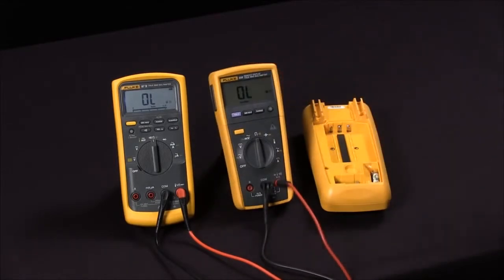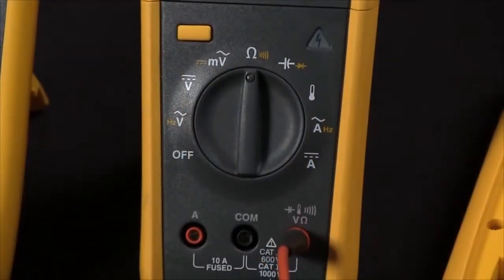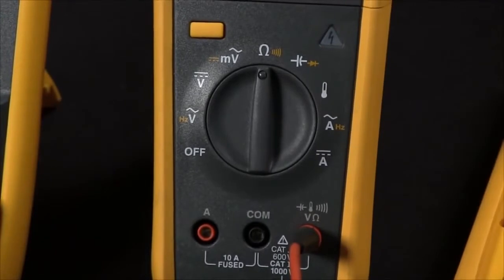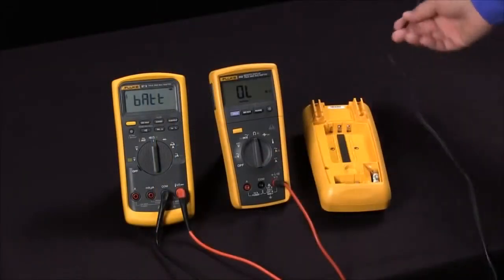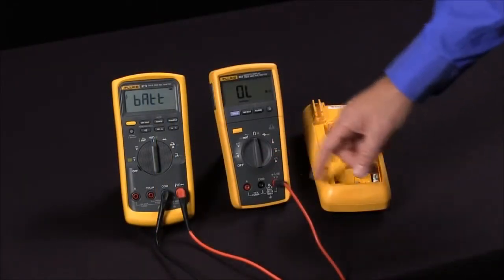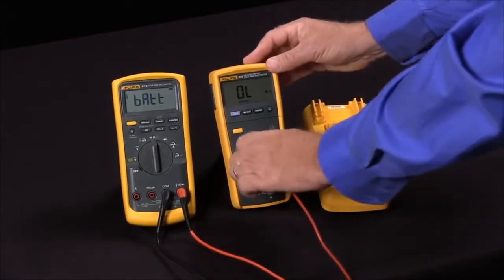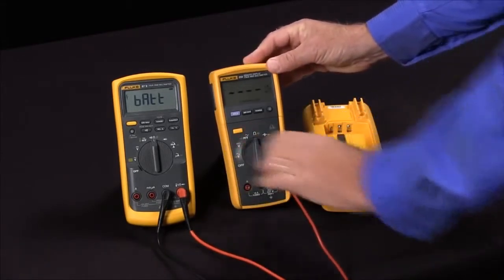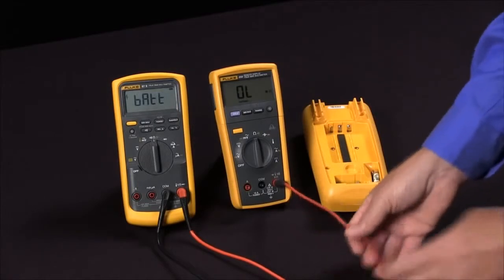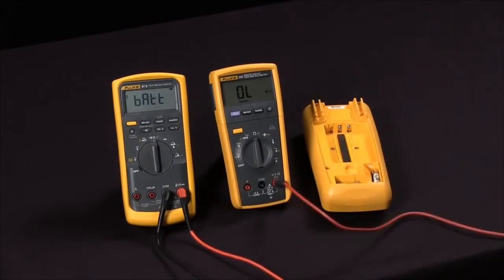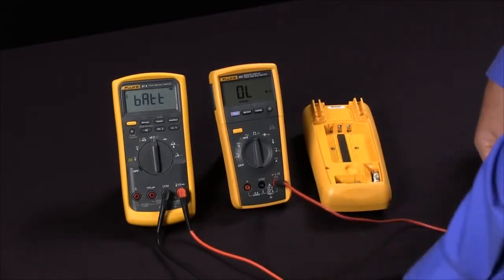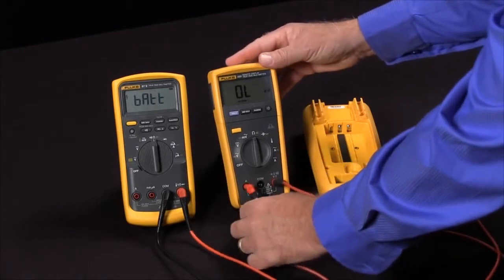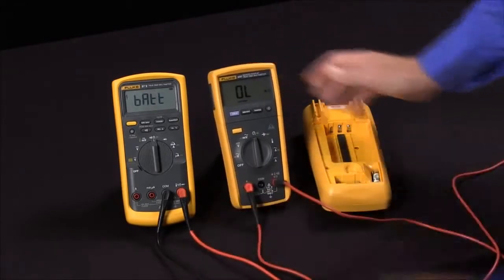And there's a much easier way to do this without having to open the case. On all multimeters that have a common jack with their amps input jacks, this common is shared by all the input jacks. So if I simply take my multimeter, change it to the ohm function and then jump from the volt ohm jack into the amp jack, I will be measuring across the fuse and seeing its continuity.